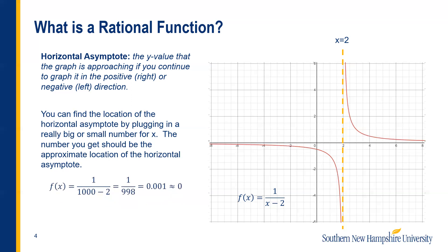So I took this equation 1 over x minus 2 and replaced x with 1,000. I'm going to get 1 over 998. If you divide that on your calculator, you'll get 0.001, which is approximately zero. So our horizontal asymptote is at y equals zero. You can see that it looks like it's cutting this graph horizontally — the graph is cut vertically by the vertical asymptote and horizontally by the horizontal asymptote.